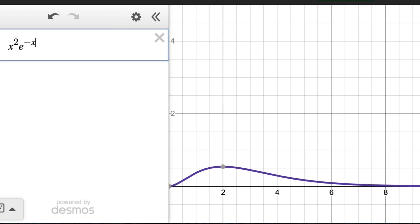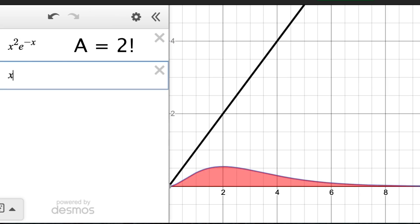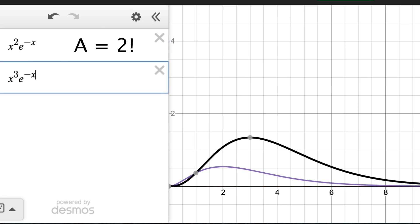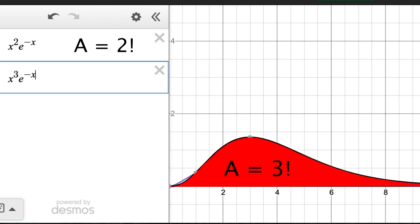Here we can see the graph of x squared times e to the minus x. The area under it from 0 to infinity is exactly 2, which can also be written as 2 factorial. Now we'll graph x to the 3rd times e to the minus x. The area under this from 0 to infinity is 6, aka 3 factorial.